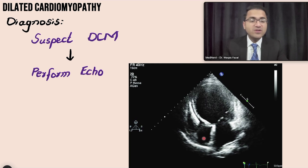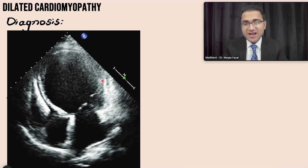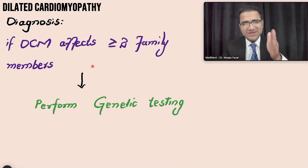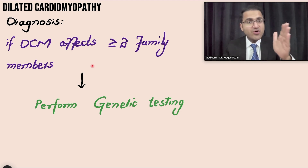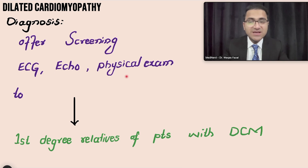Diagnosis of dilated cardiomyopathy, like all cardiomyopathies, is done on echocardiography. On echo you see the right atrium, left atrium, right ventricle, and a markedly enlarged dilated left ventricle that cannot pump blood out. If dilated cardiomyopathy affects two or more family members, genetic screening must be done — specifically testing the TTN gene. First-degree relatives should be offered screening via echocardiography, which is the mainstay. If exams ask about screening first-degree relatives, choose echo.